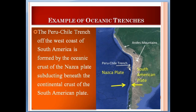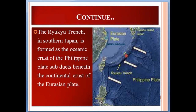The Ryukyu Trench in southern Japan is formed as the oceanic crust of the Philippine Plate subducts beneath the continental crust of the Eurasian Plate. Here you can see that the Philippine Plate is oceanic while the Eurasian Plate is continental. When the dense Philippine Plate subducts beneath the less dense Eurasian Plate, the Ryukyu Trench forms.